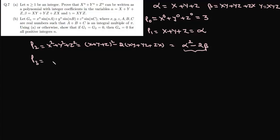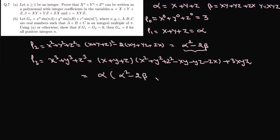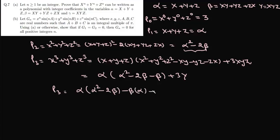For p3 = x³ + y³ + z³, we use the identity x³ + y³ + z³ - 3xyz = (x + y + z)(x² + y² + z² - xy - yz - zx). Rearranging, this gives p3 = α(α² - 2β - β) + 3γ, which simplifies to α(α² - 2β) - βα + 3γ, expressed entirely in α, β, γ.